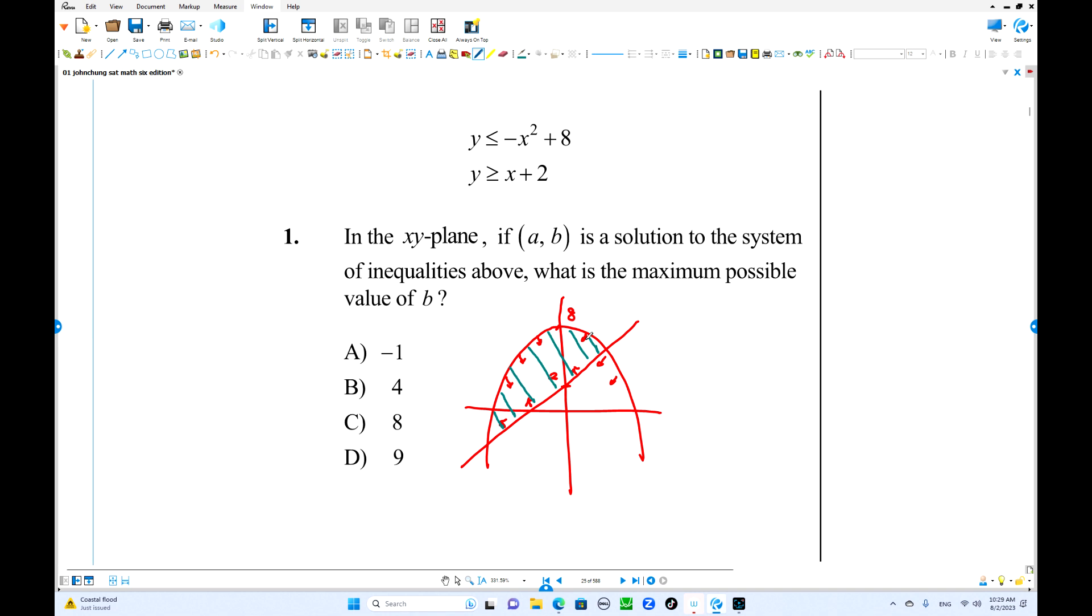So we have infinite many solutions set there. So which point, which is the solution, which point has maximum value of B? Where is the maximum value of B? This point, this point, the highest point. This point has maximum value of B. But in this case, we don't have to find intersections. This intersection, this intersection always, but lower than this number. This is the highest number.